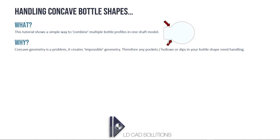Why do we need to handle these kinds of bottle shapes differently? This kind of concave geometry is a problem because it creates self-intersecting geometry when we move the bottle along the shaft. It's impossible geometry to create a solid body from. Therefore any of these pockets, hollows, or dips in your bottle shape require an extra step in the app to create successfully.